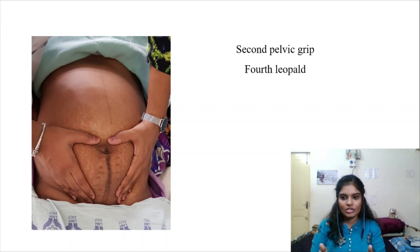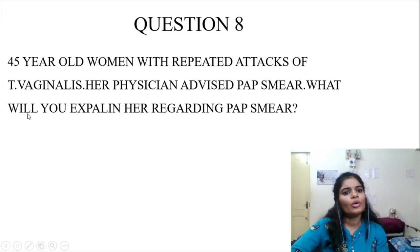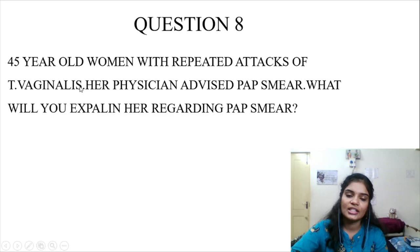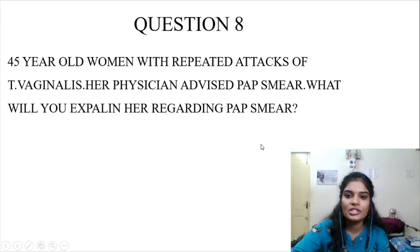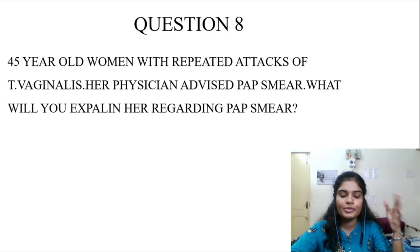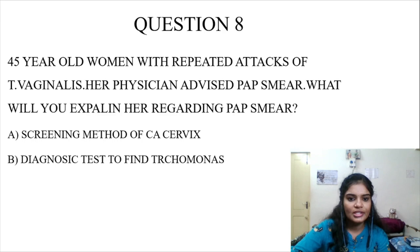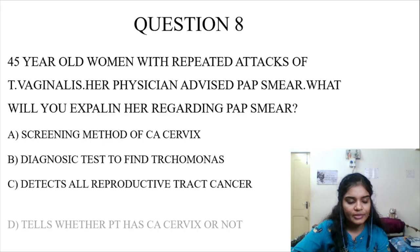Question number 8: A 44-year-old woman with repeated attacks of Trichomonas vaginalis. Her physician advised a pap smear. What will you explain her regarding pap smear? Options: A — screening method for CA cervix; B — diagnostic test to find Trichomonas; C — detects all reproductive tract cancers; D — tells whether the patient has CA cervix or not. Think about pap smear: what is it, where and when to use it.